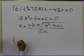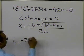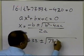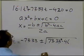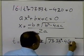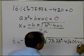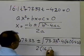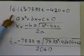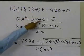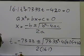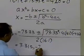In this case, the time equals −b, which is −73.33, plus or minus the square root of 73.33 squared minus 4 times 16.1 times (−420), all divided by 2 times 16.1. So a is 16.1, b is 73.33, and c is −420. Using those numbers in the formula, we get two roots: 3.315 and −7.870.